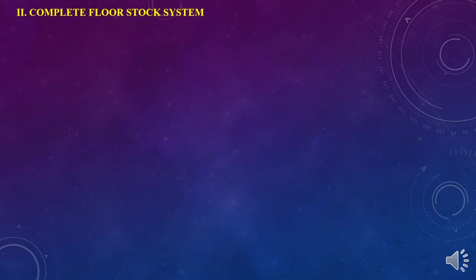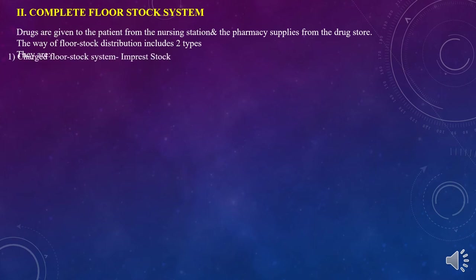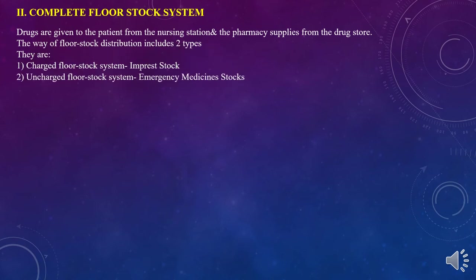The second method is the complete floor stock system. Drugs are given to the patient from the nursing station; the pharmacy supplies drugs to the nursing station. The floor stock distribution system includes two types: the first is the charged floor stock system, also called impressed stock, and the second is the uncharged floor stock system, which includes emergency medicines — meaning not all medicines are charged to the patient; some are chargeable and some are non-chargeable.